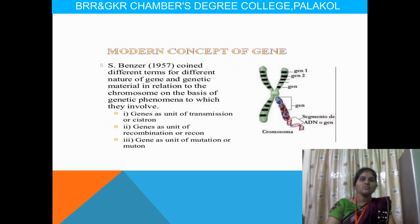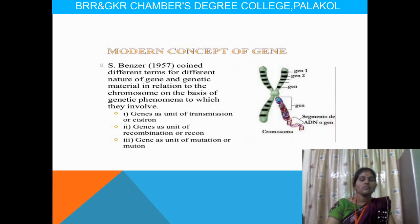The concept of modern genes: Seymour Benzer coined different terms describing the nature of genes and genetic material in relation to the chromosome on the basis of genetic phenomena. They involve genes as units of recombination, cistron, and muton. Cistron is the unit of transformation or function; muton is the unit for mutation; and recon is the unit for recombination. These are the modern concepts of the gene.